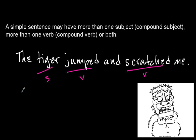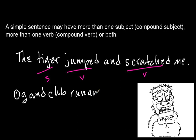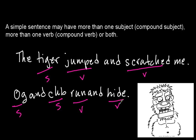So let's look at another sentence that uses both. We have Aug and his club — run and hide. In this situation we have two subjects and two verbs. Still a simple sentence. It may be a complicated simple sentence, but it's still just a simple sentence.